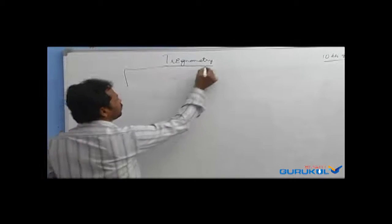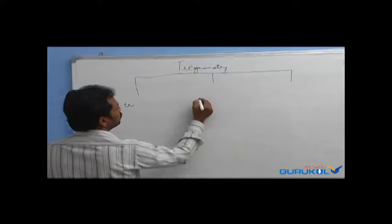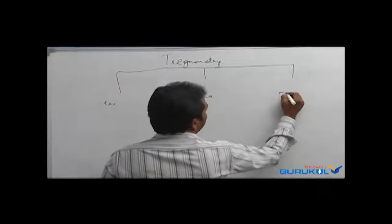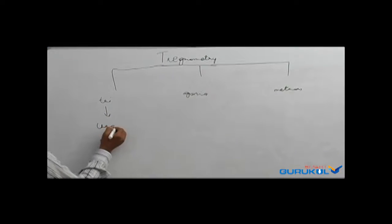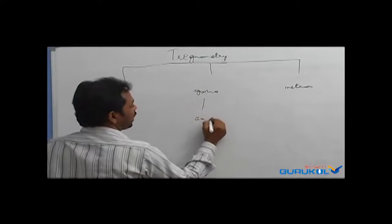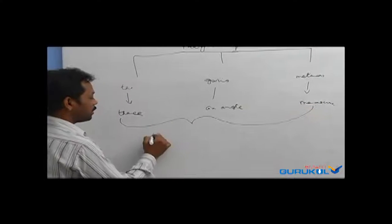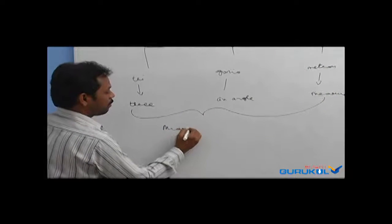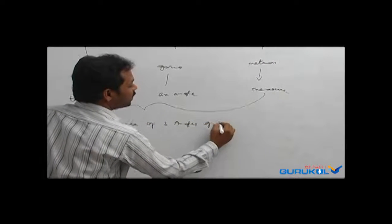Hi friends, today we will discuss about Trigonometry. Trigonometry is derived from three Greek words: tri, gonia, and metron. Tri means three, gonia means an angle, and metron means measure. Together, these mean the measure of three angles of a triangle.